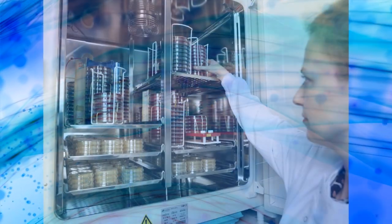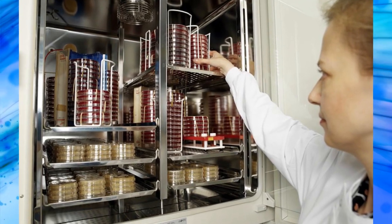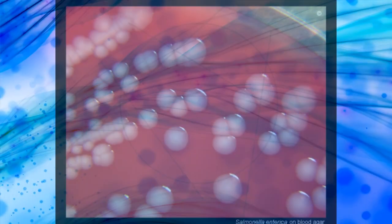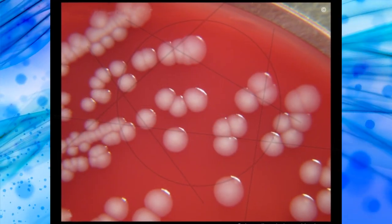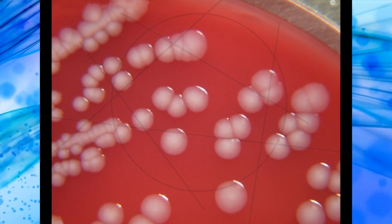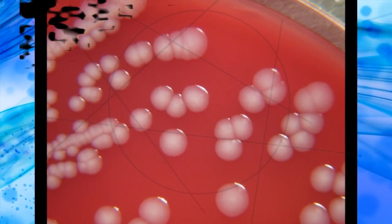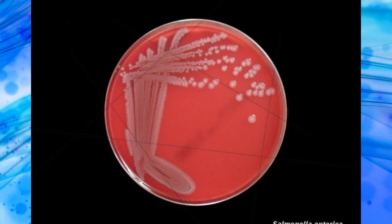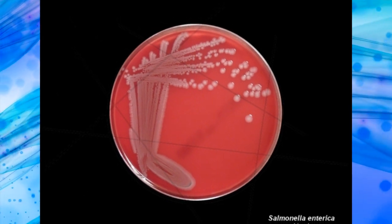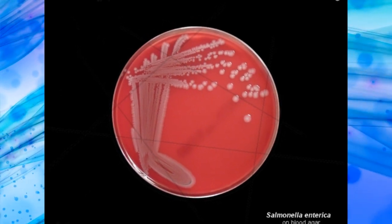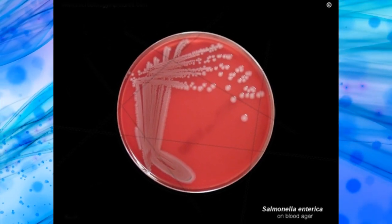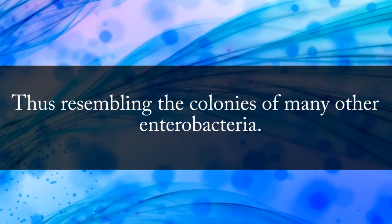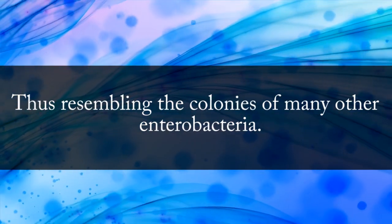After incubation for 24 hours at 37 degrees Celsius, colonies of most strains are moderately large — for example, 2 to 3 millimeters in diameter. Colonies are grey-white, moist, circular discs with a smooth convex surface and entire edge, thus resembling the colonies of many other enterobacteria.